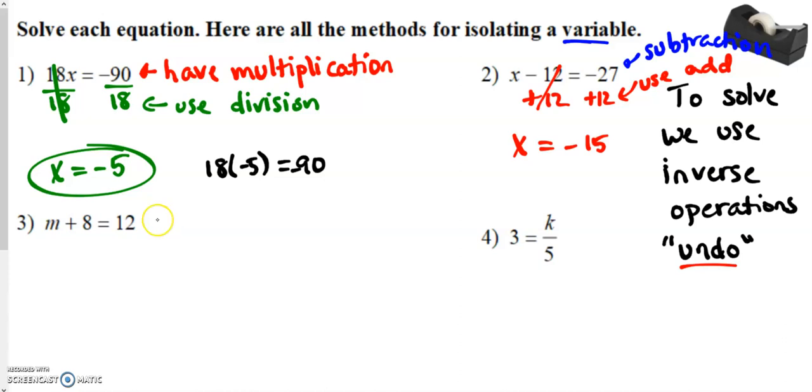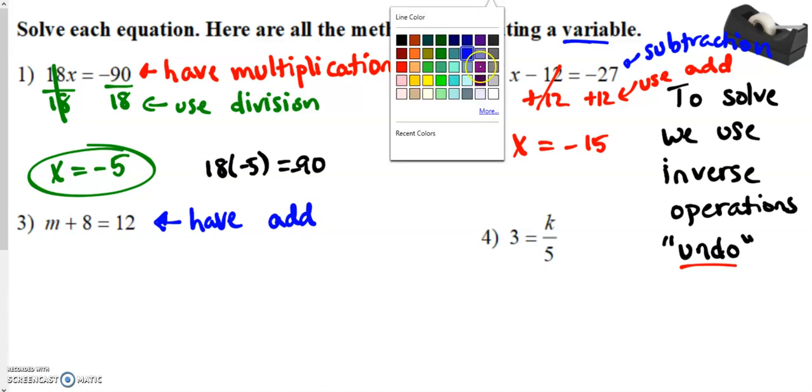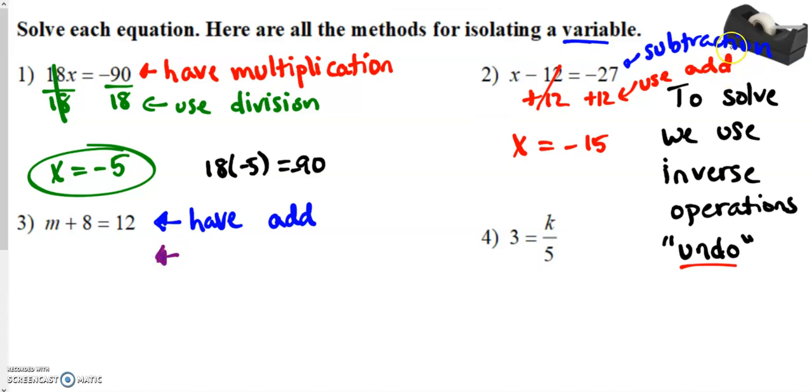Now, what about the other way? If we have, so see, in this original problem, we have M plus 8 equals 12. We have addition. So, how are we going to get rid of that? What are we going to use? We are going to, well, when we had addition, we used, sorry, when we had subtraction, we used addition. So, we're just going to kind of reverse that. If we have addition, we're going to use subtraction. Okay. So, we're going to subtract 8. By the way, at any point in time, if you need to pause this, please don't hesitate. So, we have crossed out our 8s because 8 minus 8 would be 0. So, M is going to equal 12 minus 8, which is 4.